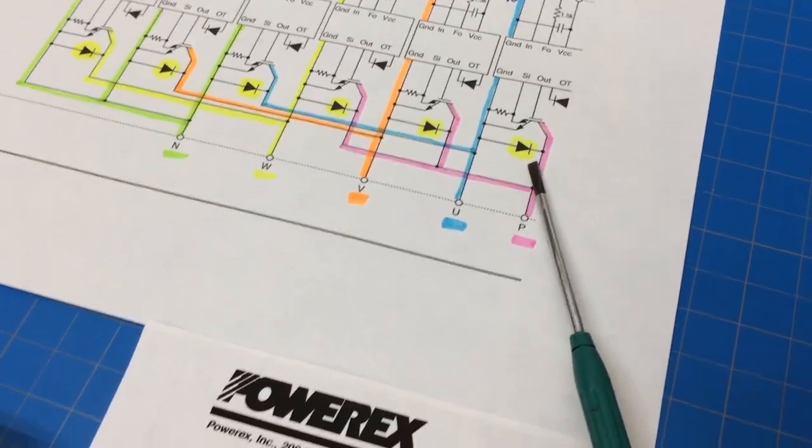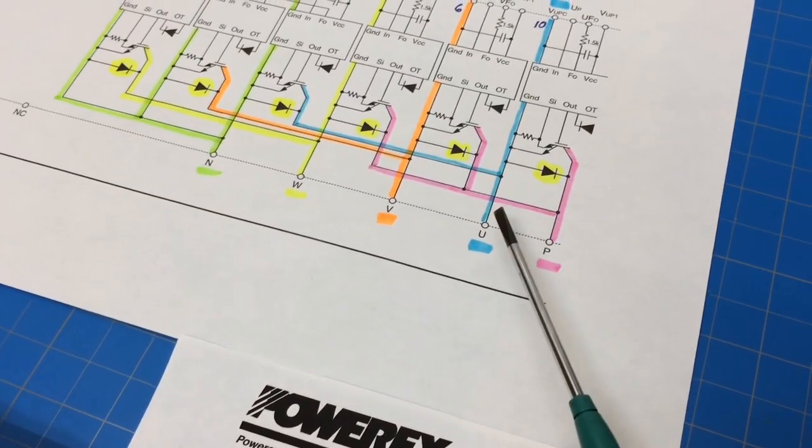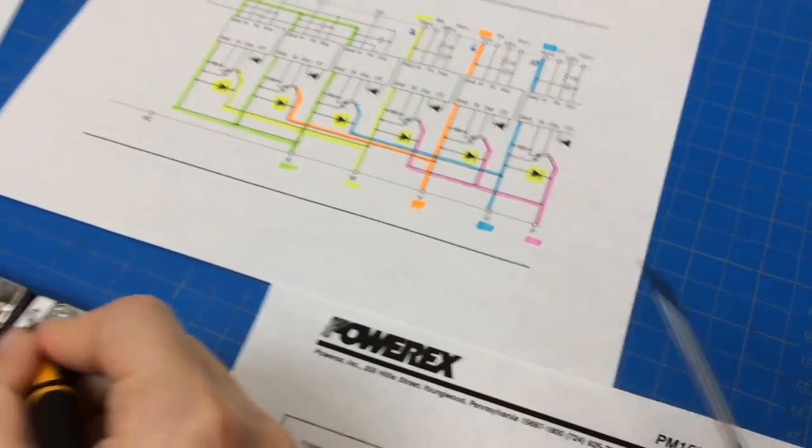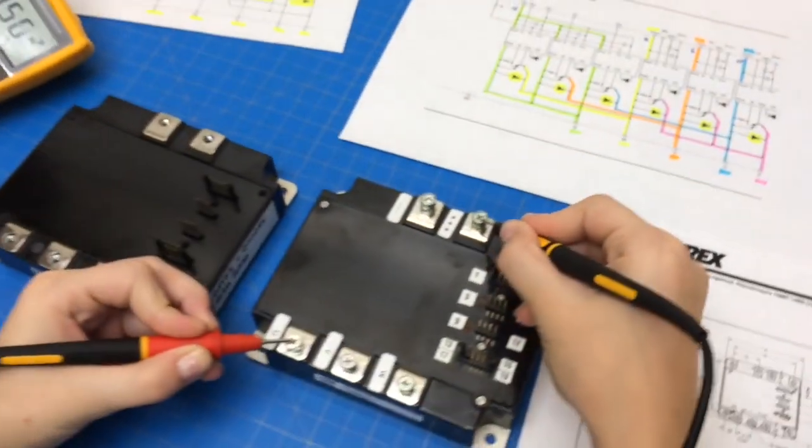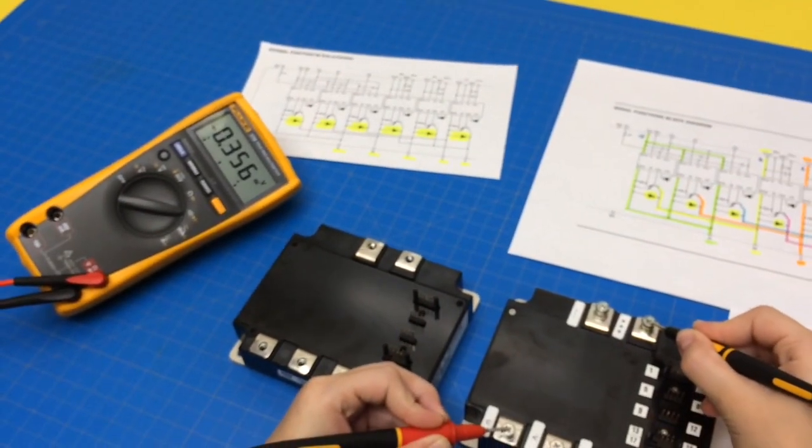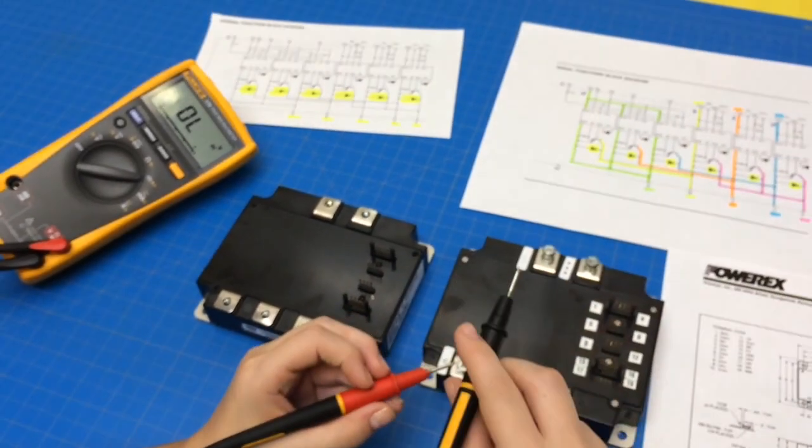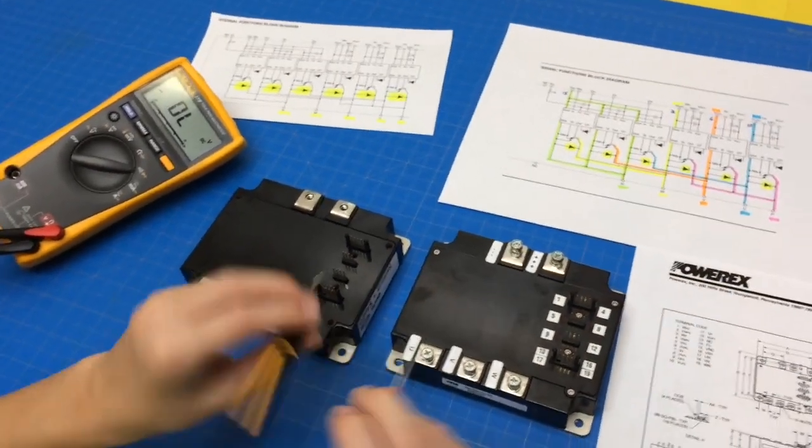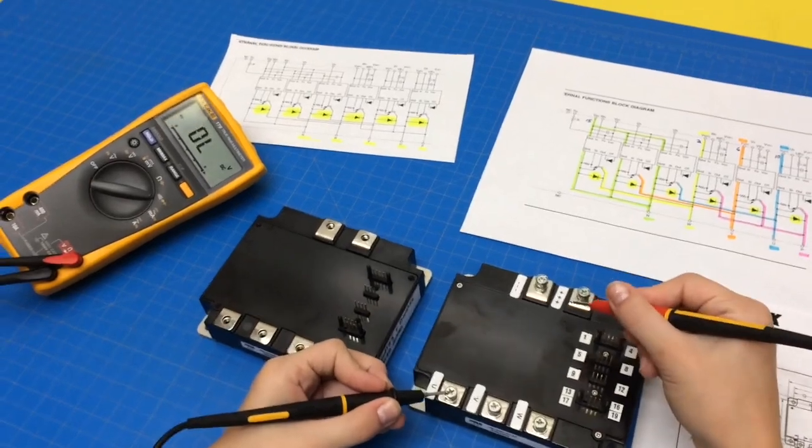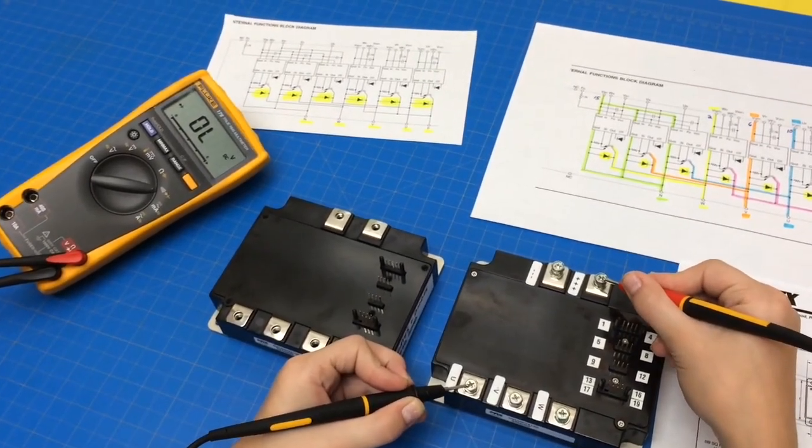Let's see if you can test that diode. So let's go red to U and black to P. Okay, so that's a good voltage drop on a forward bias diode. Now, just reverse those, and we should read OL. And we do.